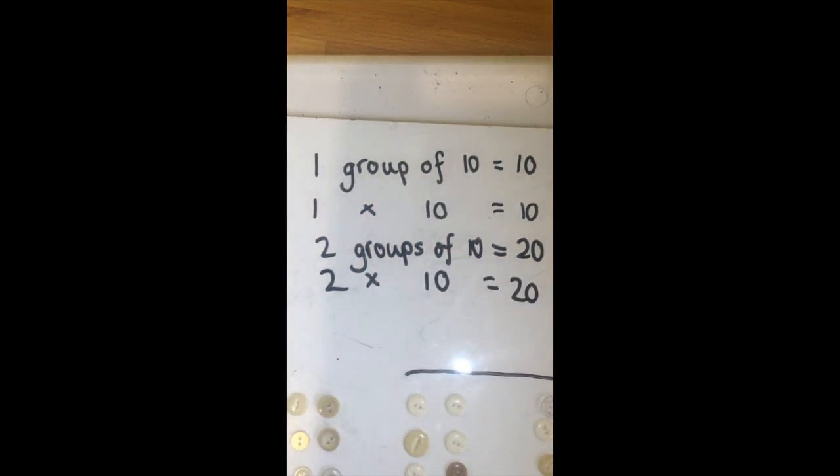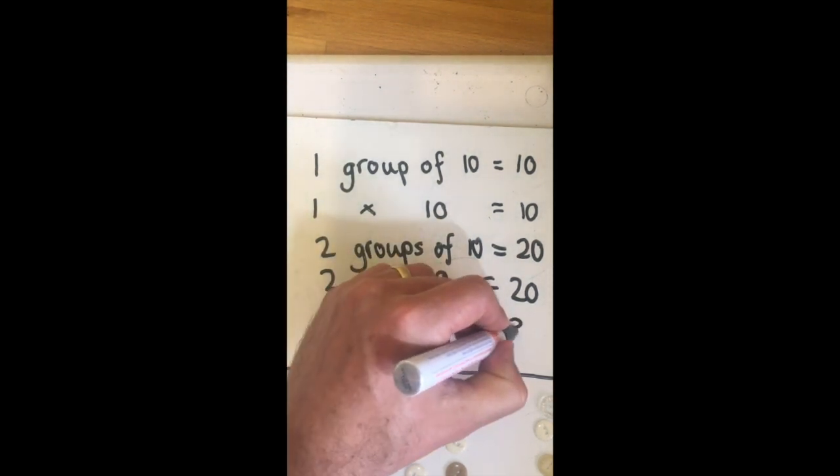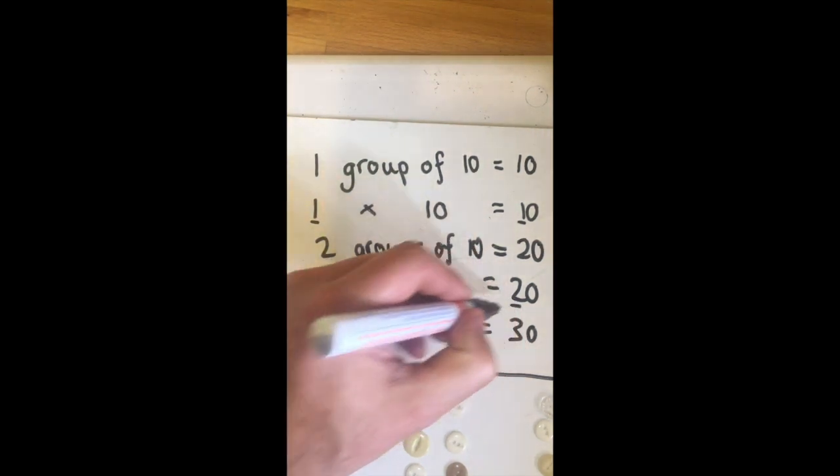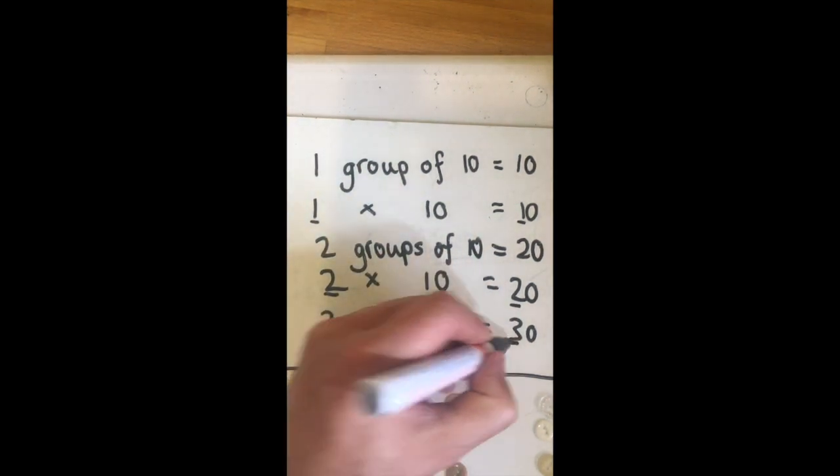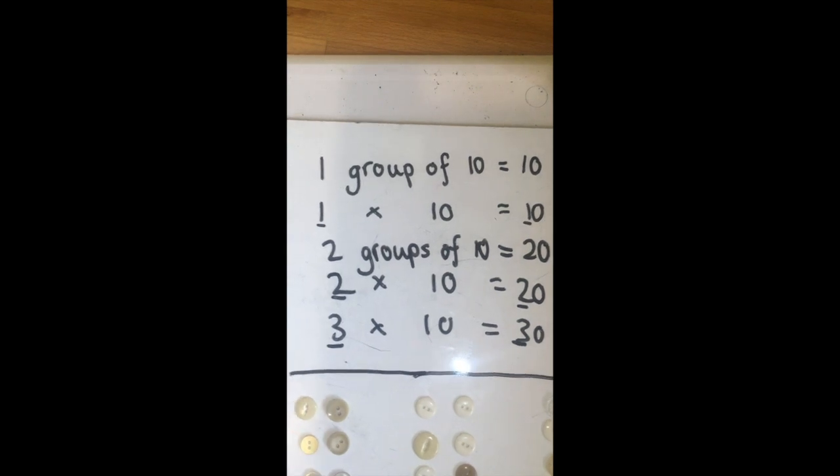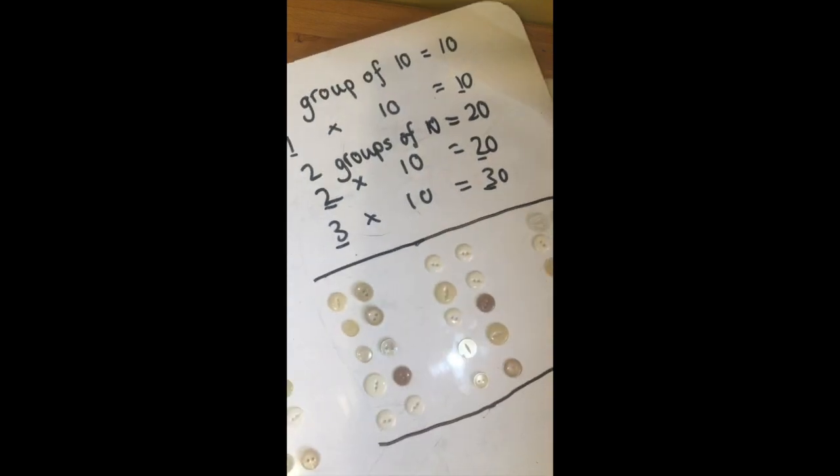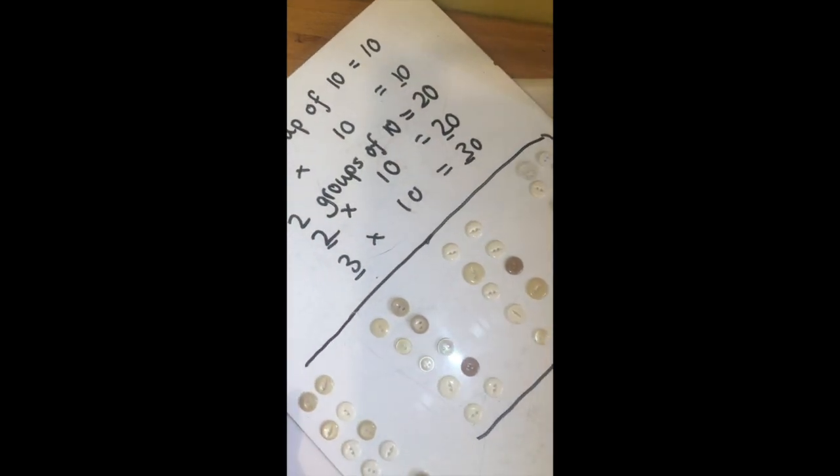And I can continue this pattern. Three times ten equals thirty. And you're probably starting to notice that we've got this digit repeated and we could repeat and carry on again to the fourth group over here.